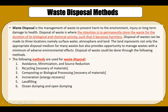Avoidance, waste minimization, and reducing the source is the best way to eliminate waste. Second is recycling, which helps us recover material. Next is composting or biological processing, which helps recover material in the form of soil. Then incineration, which helps recover energy from the waste. Number five is landfilling, and last is ocean dumping or open dumping, which is the least desired method.